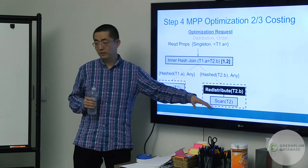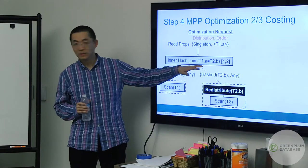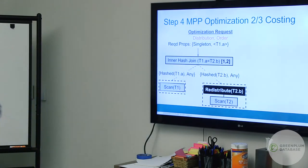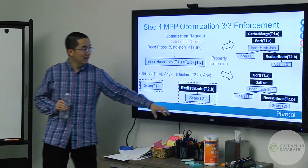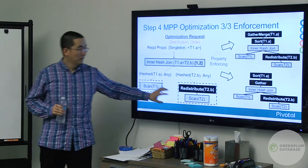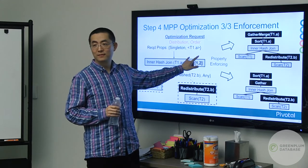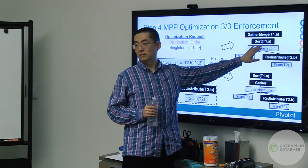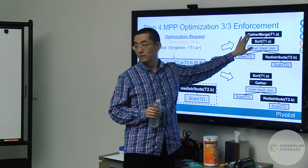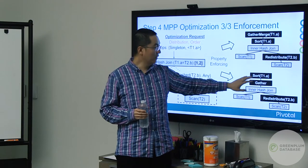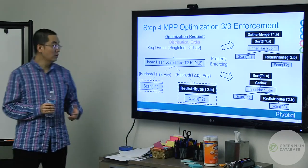However, if T2 is actually distributed on a different column — say column C — then we need to redistribute it on column B so we can join them together, incurring extra redistribution cost. For the order requirement, we can either sort all results on T1.A and do a merge with order-preserving gathering, or do a gathering without caring about order and sort at the very end. All these variations will be evaluated and costed, and the cheapest plan will be chosen and returned to the host.